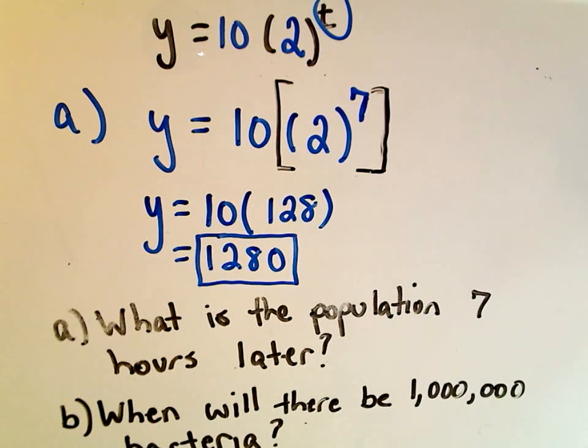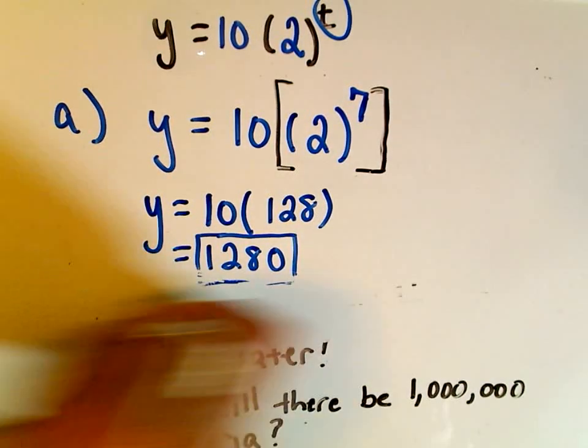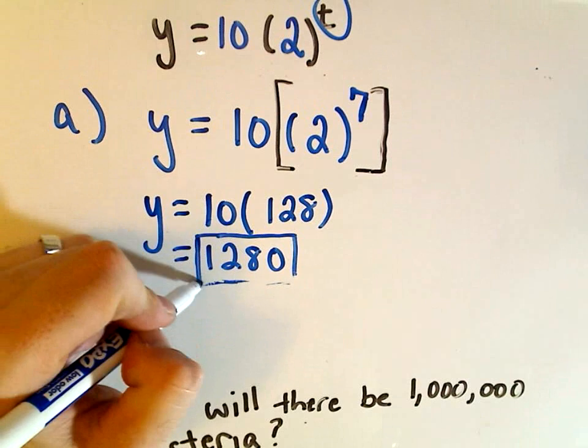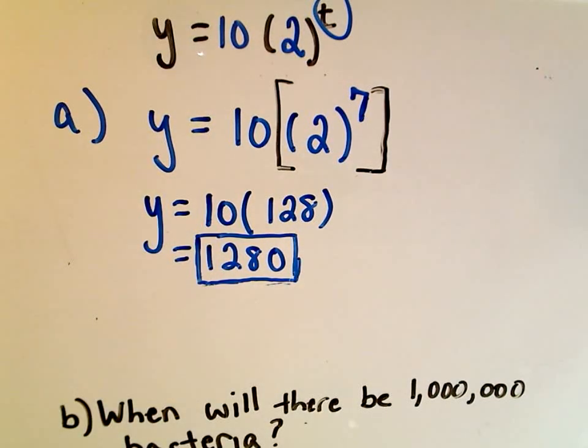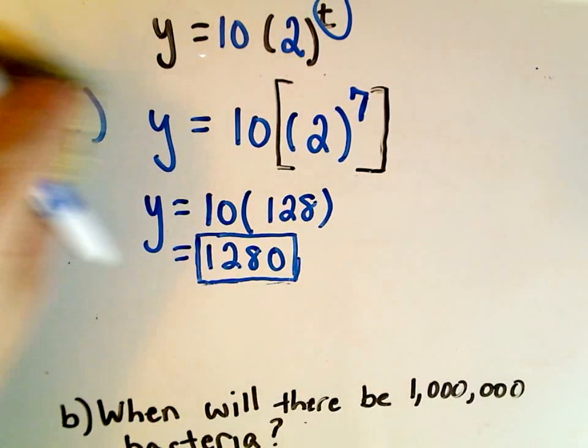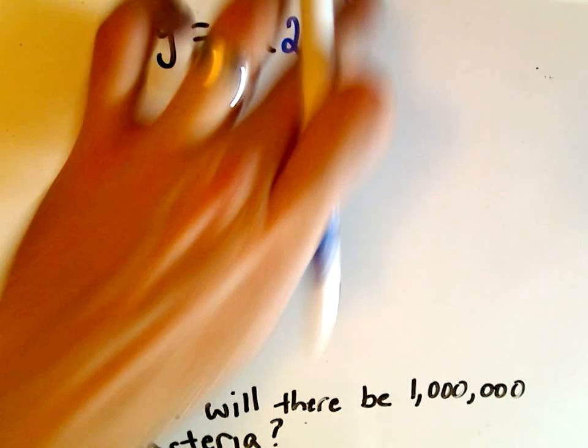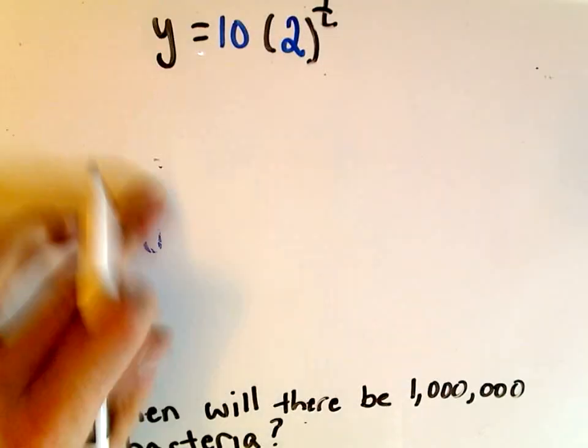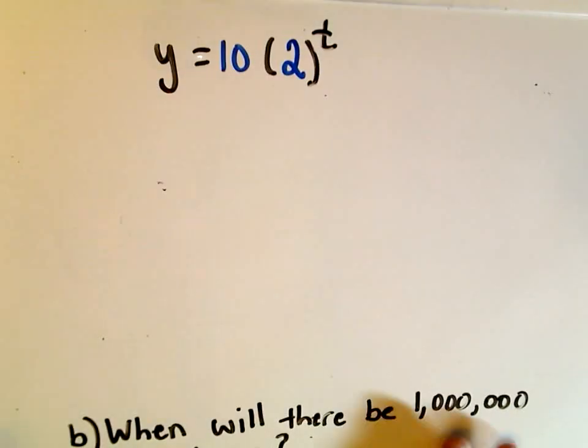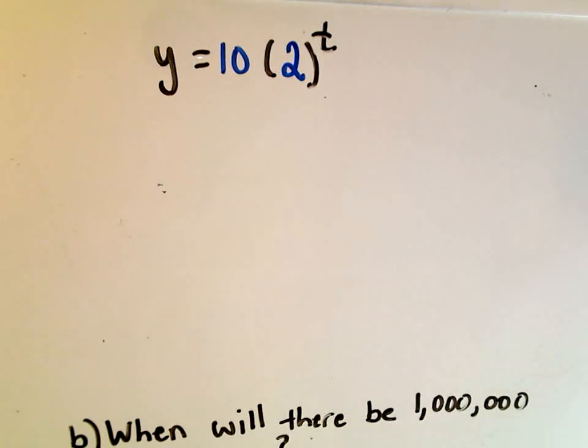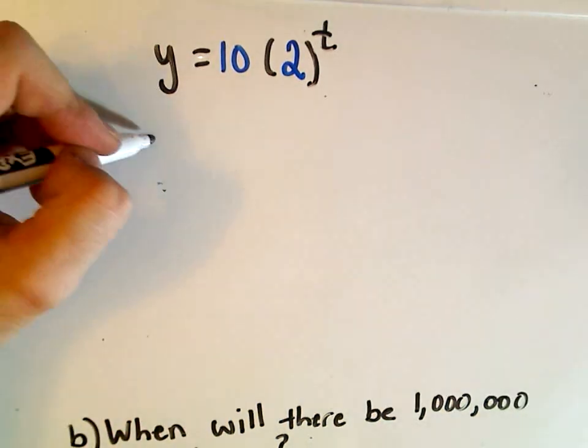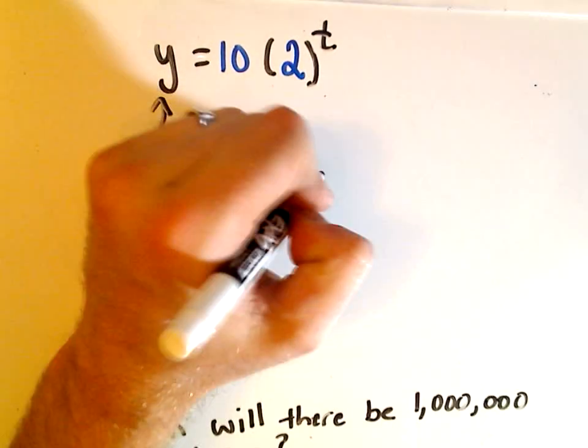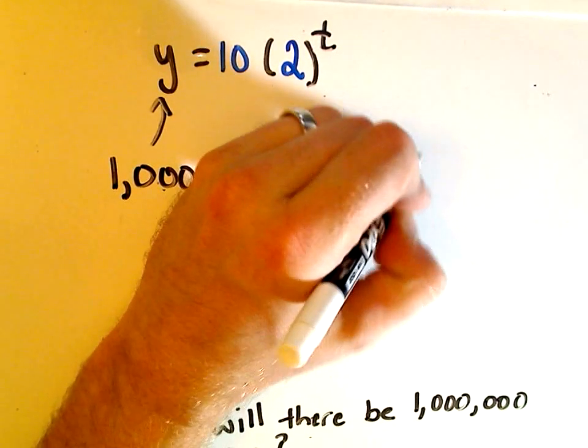For part b we just have to manipulate our equation to solve part b. We're going to have to use logarithms. If you haven't seen logarithms yet you could always make a little table, but I'm going to do it the exact algebraic way. So we need to revisit our equation. So now what are we trying to solve for in our equation? We're trying to figure out the time, we want to know how much time should expire so that we'll get a million bacteria. Well we want a million as the final amount, so that's what we'll plug in for our y. We want to get a final amount of one million bacteria.